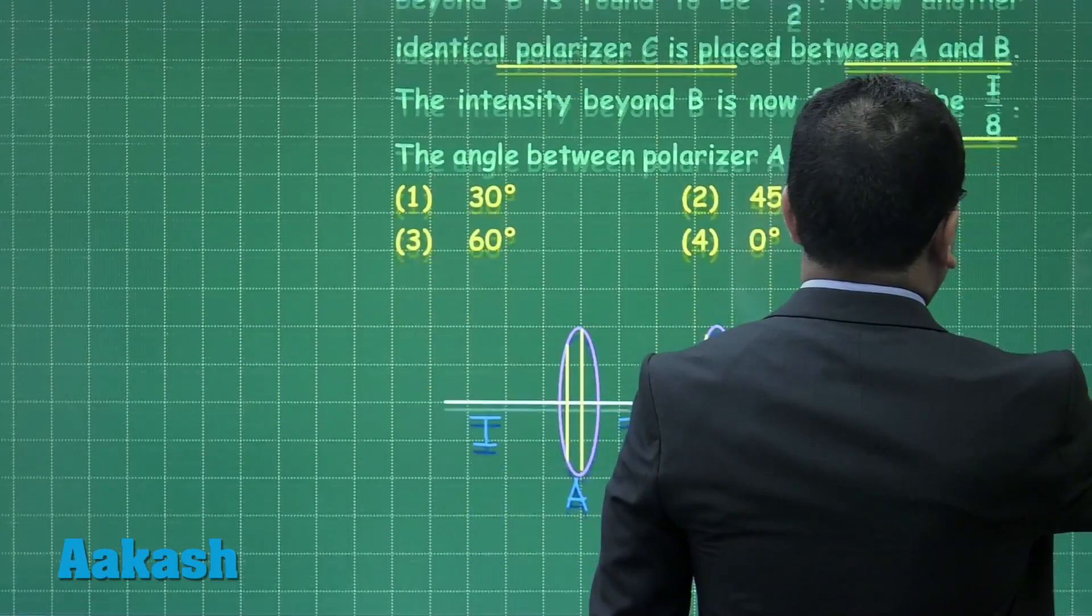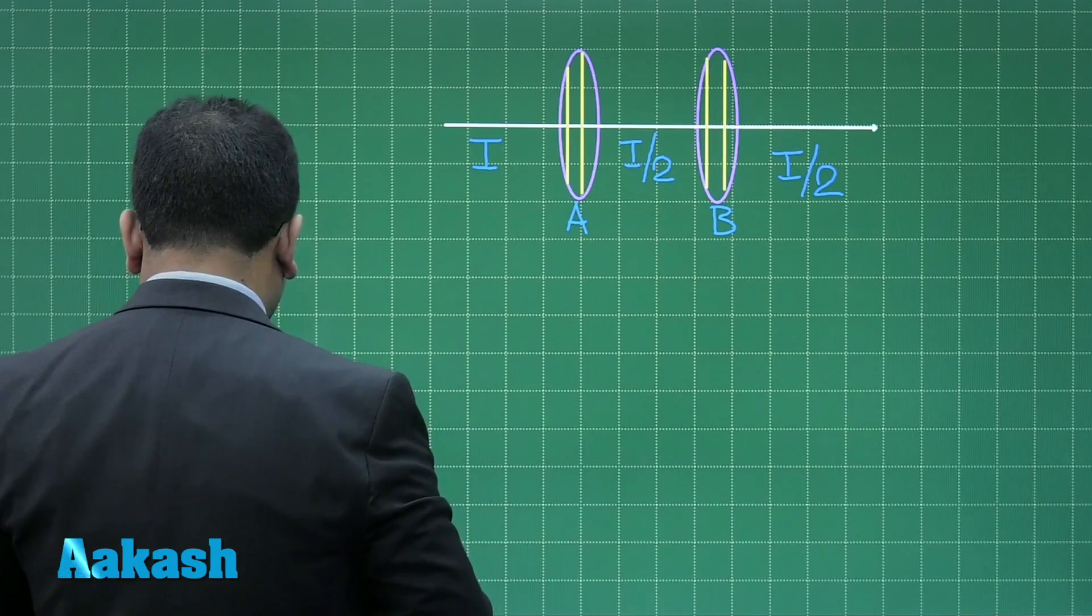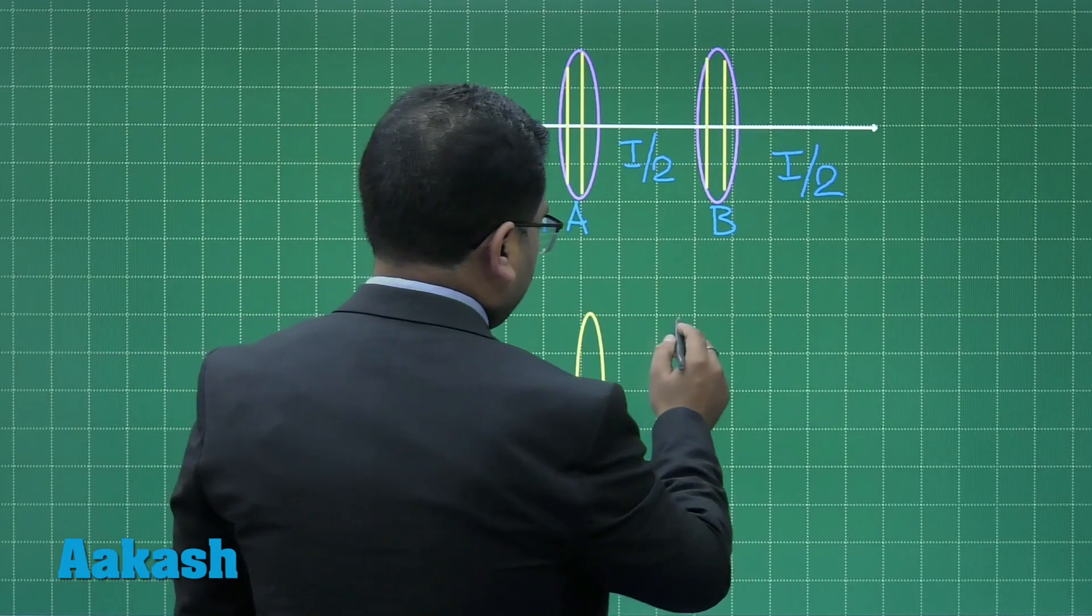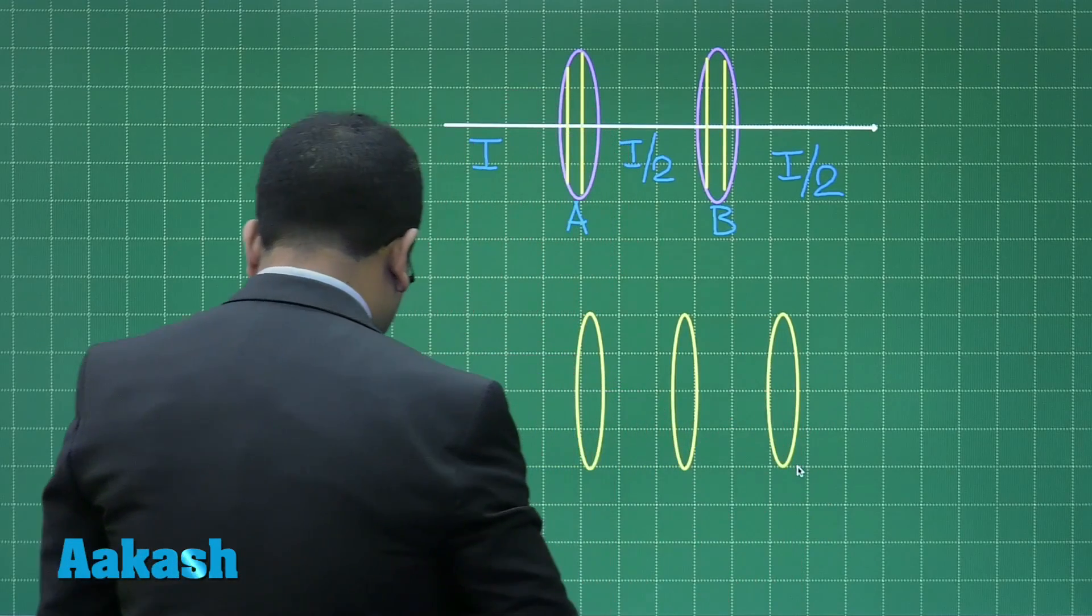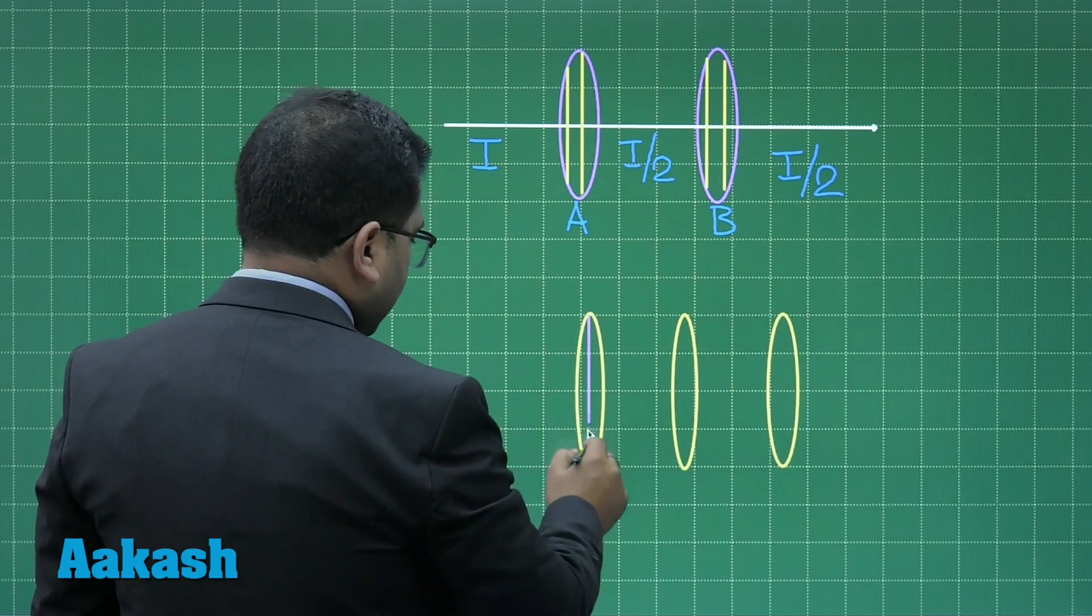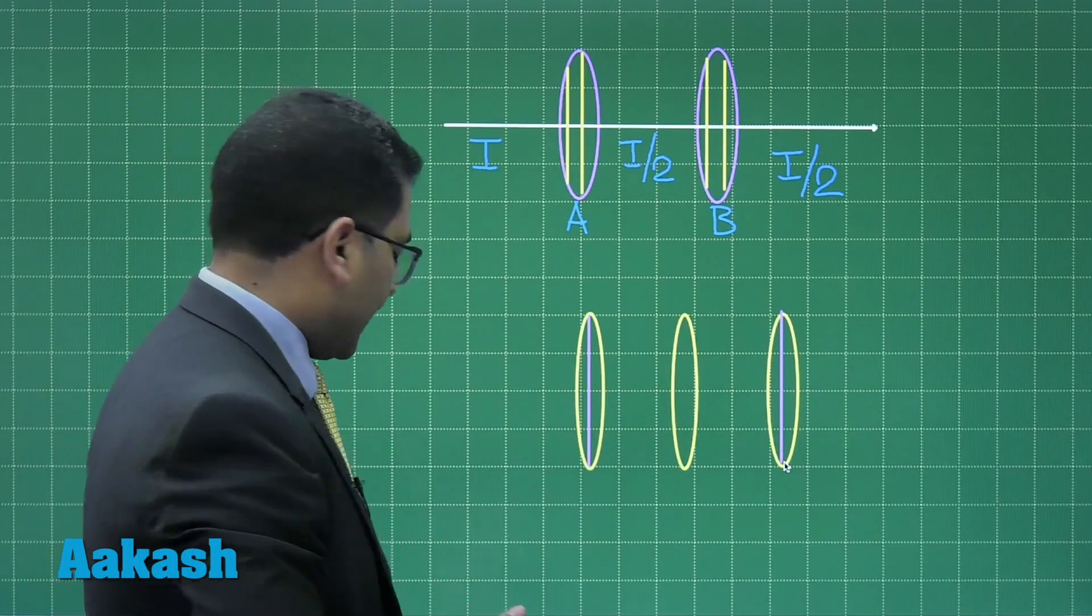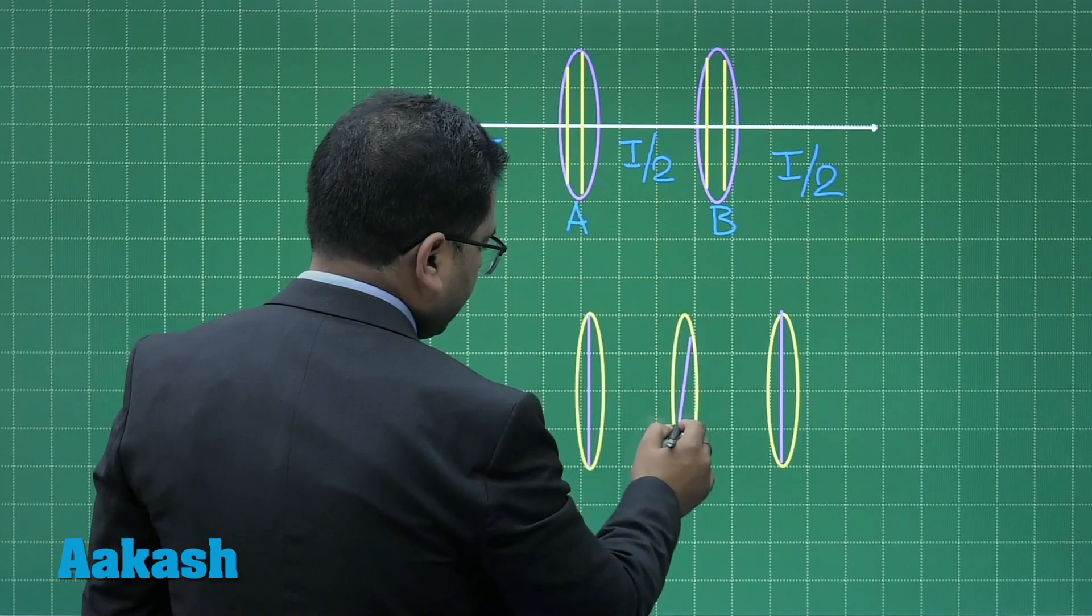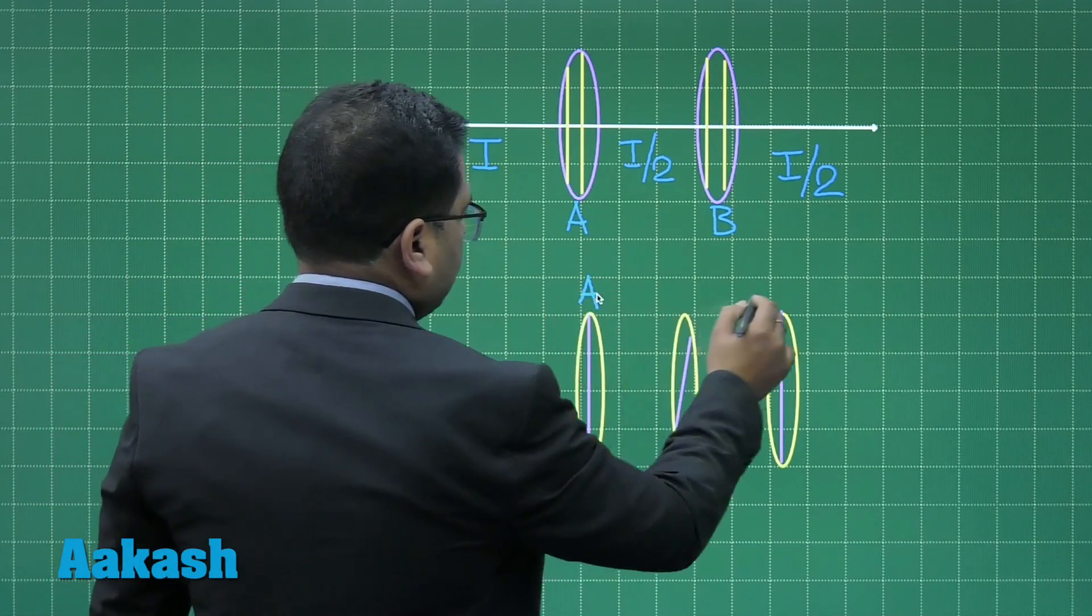Let's try to see here. Let me make the polarizer again. This time we have three polarizers. So this is polarizer A, this is polarizer C, and this is polarizer B. It has already been given that polarizer A and polarizer B have the same plane of polarization.